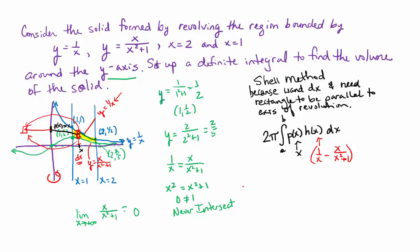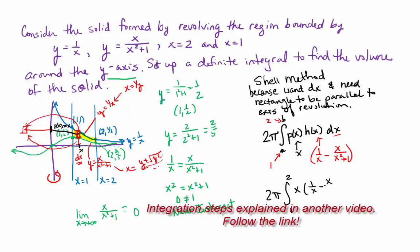So now, what are the bounds going to be? How do you know that it's x values for the bounds? Dx. So we're going to go from 1, because we have x equals 1 to x equals 2. We're going to go from 1 to 2. So what's the integral then that we need to solve? We need to solve 2 pi times the integral from 1 to 2 of x times 1 over x minus x over x squared plus 1 dx.